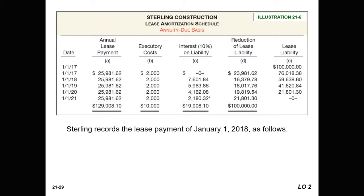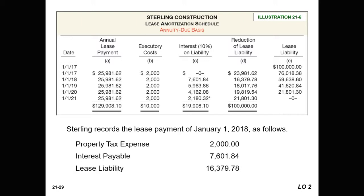On January 1, 2018, we remit a payment of $25,981.62. Of that, $2,000 goes to property tax expense, $7,601.84 reduces the interest payable accrual from December 31, 2017, and $16,379.78 reduces the lease liability, totaling the full annual lease payment in cash of $25,981.62.